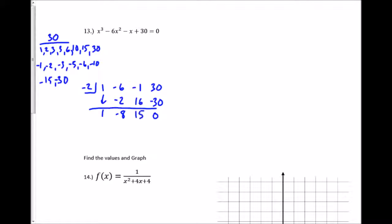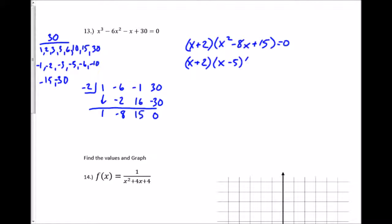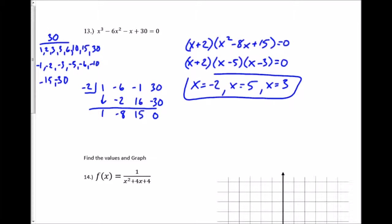We won't always get it on the first try, so we do a little guess and check. Now (x+2) is one of my factors; the other is x² minus 8x plus 15. Two numbers that multiply to positive 15 but add to negative 8 — that's negative 5 and negative 3. So my three solutions are x= negative 2, x=5, and x=3.